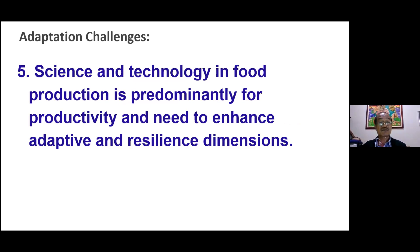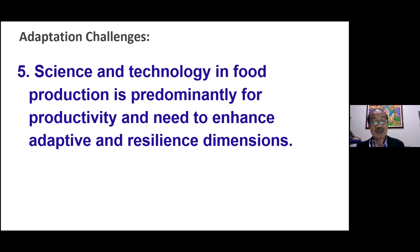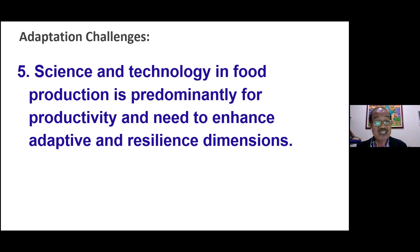Challenge number five: science and technology in food systems and food production is predominantly focused on productivity, and needs to enhance adaptive and resilient dimensions. Most agronomic developments are designed to produce higher yield. What we need more is to incorporate adaptiveness and resilience to climate change as parameters and criteria for developing new varieties and new kinds of crops.